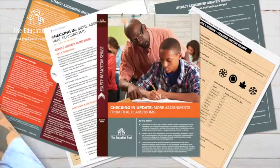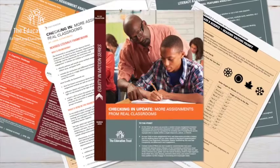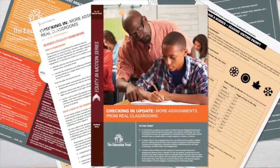The Education Trust Equity in Motion Project is meant to look at how issues of equity are playing out in classrooms all across the country. In our first report, we took a look at over 1,500 assignments. The second report takes a closer look at just a handful of assignments to see how we're doing in implementing our rigorous college and career-ready standards.